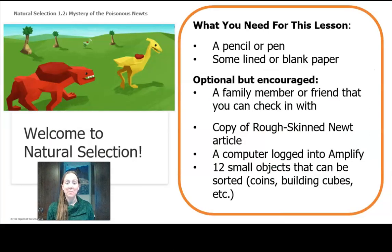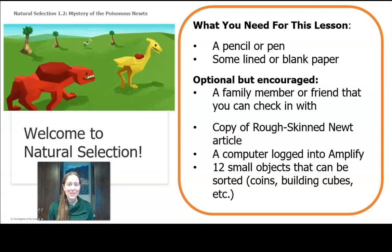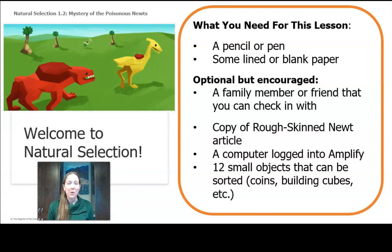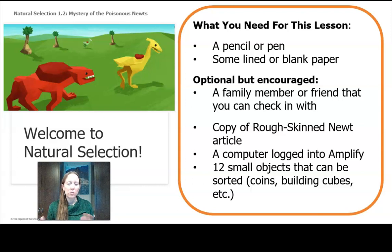What you'll need for this lesson is something to write with and something to write on. Optional materials: if you have someone that you can check in with — maybe a family member, a friend, or a relative that you can text or Snapchat — that's great. If you have a copy of the Rough Skin Newt article, even better. If you have a computer, go ahead and log into Amplify. And for an activity near the end, if you have 12 small objects that can be sorted — coins, building cubes, any small thing that has differences — that will be helpful.